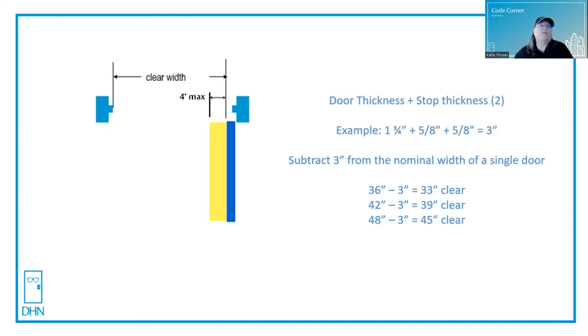And how do we get the clear width? It's measured with the door open 90 degrees from the face of the door to the face of the stop of the frame. Any door that's hung in butt hinges, continuous hinges, or offset pivots, the results are the same.